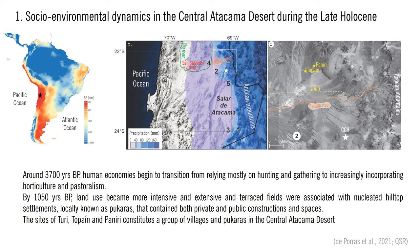By 1,050 years BP, land use became more intensive when extensive systems of canals and terraced fields were built for the cultivation of crops such as tubers, maize, or quinoa, around and above 3,000 meters above sea level. The terraced fields were associated with nucleated hilltop settlements locally known as pucaras, that contained both private and public constructions and spaces. The elaborated field systems were later appropriated, modified, and expanded following the conquest by the Inca Empire in the 15th century.